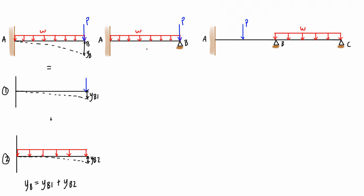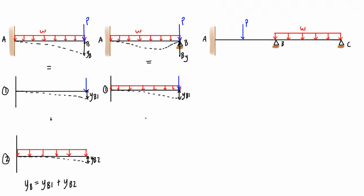It works exactly the same way with an indeterminate problem. Looking at the next example — a statically indeterminate beam — reaction BY is just a vertical point load. We don't know what BY is, but we know the deflection of the loaded structure eventually reaches zero at the support. So we use the principle of superposition: the deflection from the applied loads plus the deflection from the reaction must add up to zero.